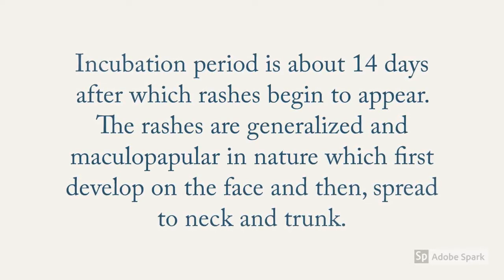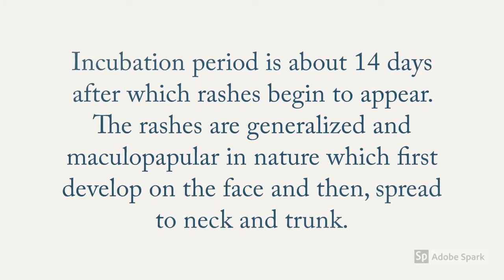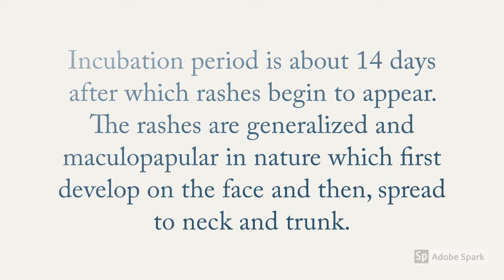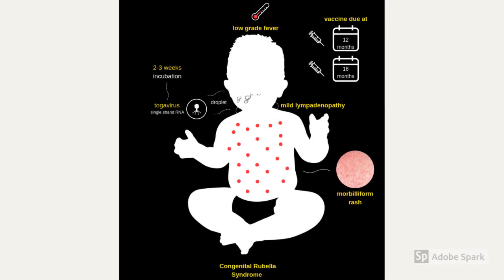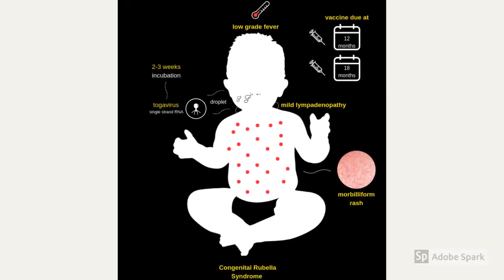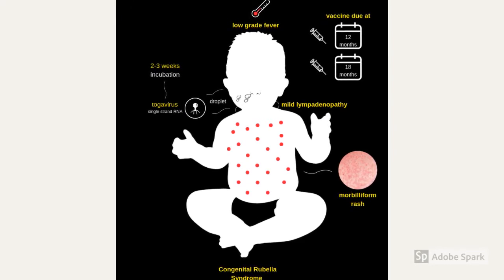These rashes are generalized and maculopapular in nature, first developing on the face and then spreading to the neck and trunk. They are sometimes referred to as morbilliform rashes. In older children and adults, the rashes are preceded by low-grade fever, malaise, and lymphadenopathy. Lymphadenopathy is the striking feature of this infection and involves the occipital and posterior auricular lymph nodes.